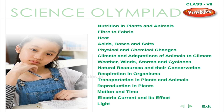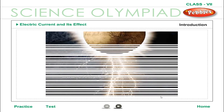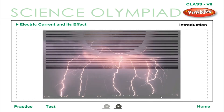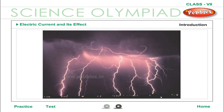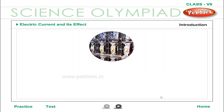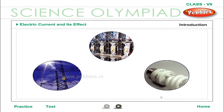Science Olympiad, Class 7: Electric Current and Its Effects. Introduction — electricity is one of the most important forms of energy used in the world today. The word electricity comes from 'electron', the Greek word for amber. The flow of electrons is called electricity. There has never been any other scientific achievement that has had such profound and far-reaching consequences. The harnessing of electric power and the development of electrical communication has changed our way of life.